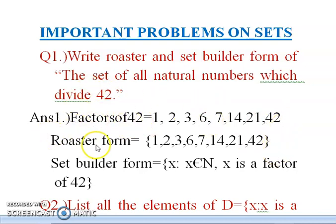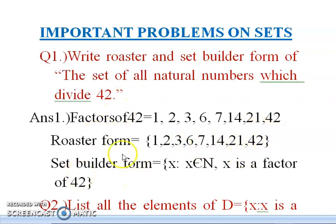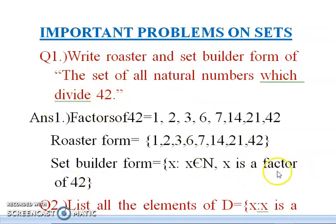Now from these factors, we will write the roster form. In roster form, we use curly brackets and all elements are separated by commas: {1, 2, 3, 6, 7, 14, 21, 42}. Now coming to set builder form: it is written as {x : x ∈ N, x is a factor of 42}, because the set consists of natural numbers that divide 42.